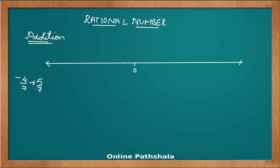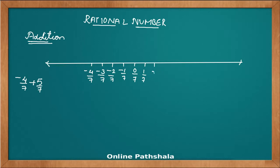Let's first put the numbers on the left hand side. We have the negative rational numbers: minus 1 by 7, minus 2 by 7, minus 3 by 7, minus 4 by 7. On the right hand side of 0, we have the positive rational numbers: 1 by 7, 2 by 7, 3 by 7, and 4 by 7.